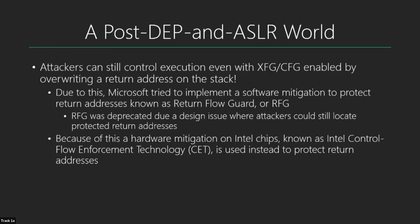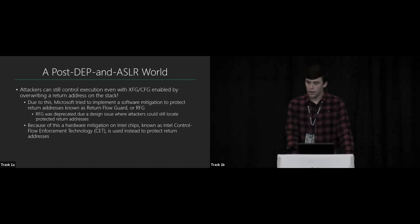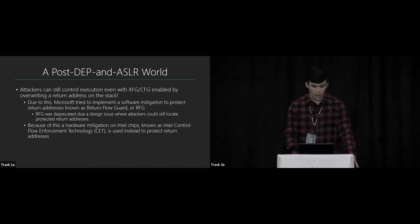We can still control execution through return address overrides. Microsoft tried to implement a software mitigation called Return Flow Guard, but it was deprecated because their red team found an inherent design flaw where an attacker could always leak the protected return addresses. Because of that, Windows now relies on a hardware mitigation instead: Intel Control Flow Enforcement Technology, or CET, to protect return addresses on the stack.